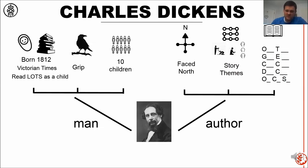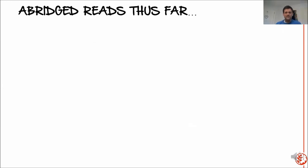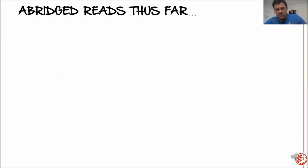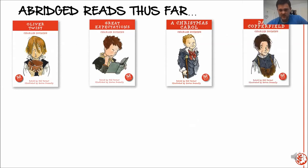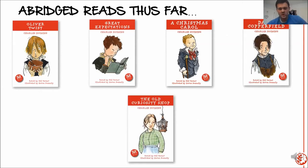He wrote many, many famous books: Oliver Twist, Great Expectations, A Christmas Carol, David Copperfield, and The Old Curiosity Shop that we're going to carry on now. We are on our fifth abridged Charles Dickens book. Remember, abridged means a shortened version. I really like these Real Reads books because they use a lot of Dickens' original language, and although they take some parts out, they keep the most exciting bits in.